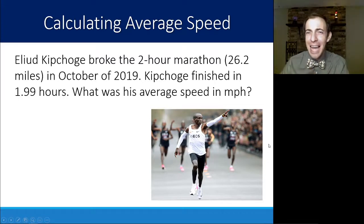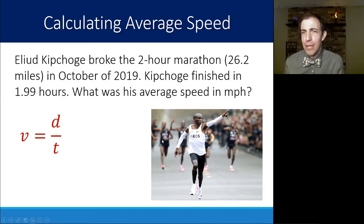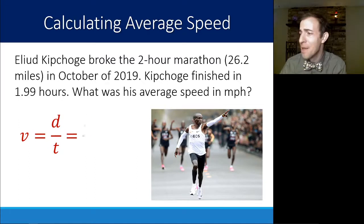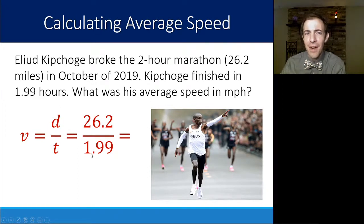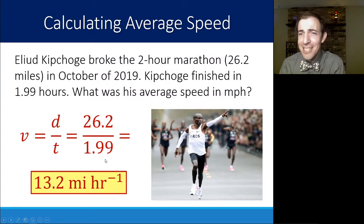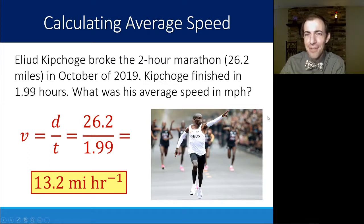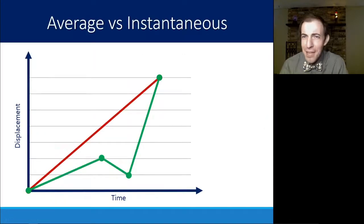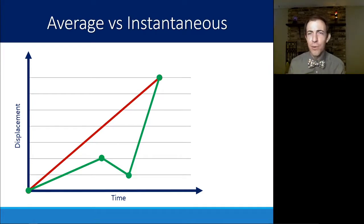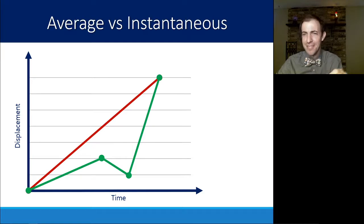We can calculate his average speed during the entire two-hour marathon using the simple equation that velocity is just distance over time. The distance is 26.2 miles divided by just under two hours — 1.99 hours — which gives a whopping 13.2 miles per hour. Technically what we're calculating is average speed, not instantaneous speed. It doesn't mean he was moving at exactly 13.2 miles per hour at every moment — he actually sped up at the end when he saw the finish line.